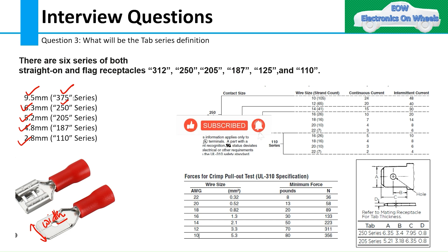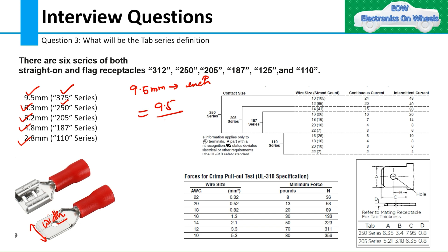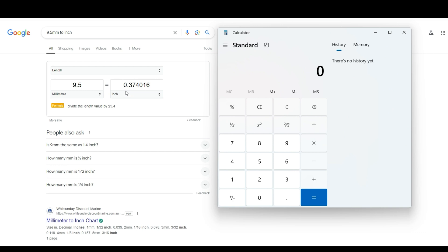One of our subscribers on the Telegram channel gave the answer to this question. The derivation is done by converting mm into inches. For example, for 9.5 mm: divide by 25.4 to convert to inches, then multiply by 1000. Let me show you on the calculator — 9.5 mm converts to 0.374 inches, and multiplied by 1000 gives approximately 374, hence the 375 series.